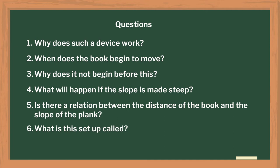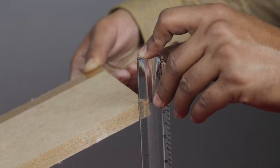What is this setup called? Where is it used? After this demonstration, we have concluded that steepness of the line was a deciding factor, and the steepness of the line is also known as a slope.